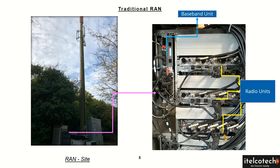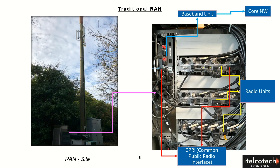Now let's understand how it is connecting with each other. The radio module goes back through these jump cables and connects back to the antenna. These black cables connect with each and every radio module.